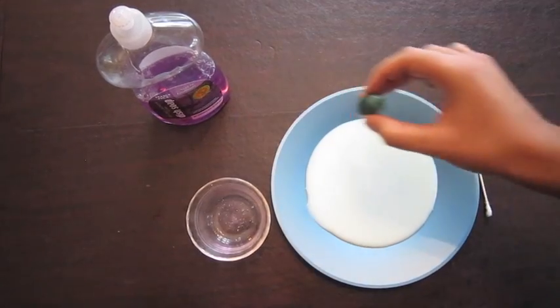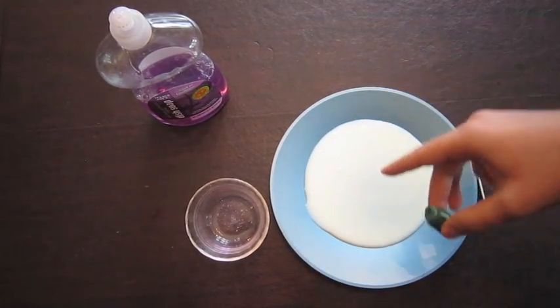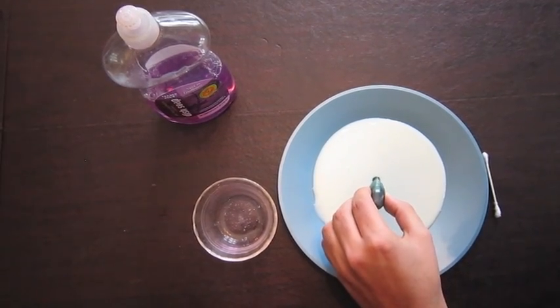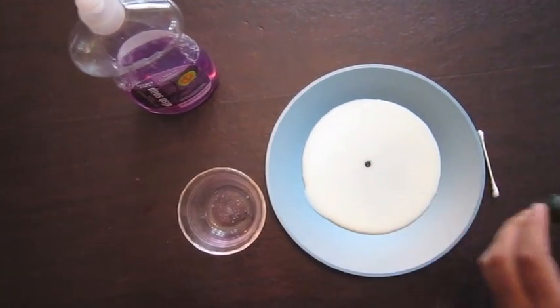Start by putting a little bit of food dye in the middle of the milk. Just like that.